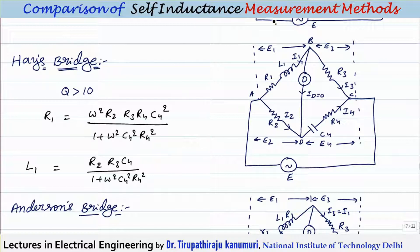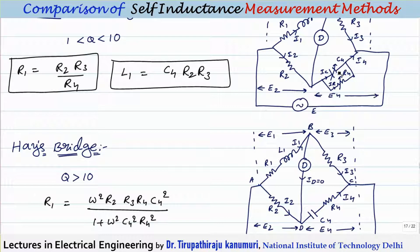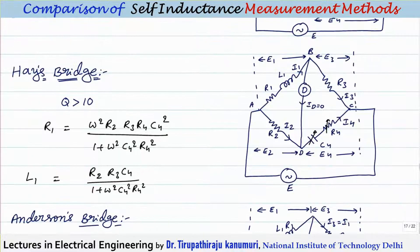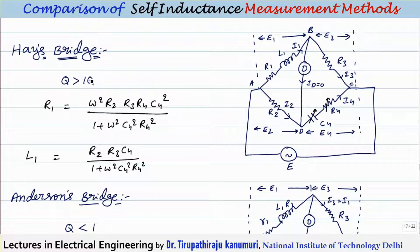The Hays bridge is a modification of the Maxwell's inductance capacitance bridge. Here, instead of keeping the capacitor in parallel with the resistance, we keep a variable capacitor in series with a variable resistor. They are kept in series so that it can be effectively used for Q values greater than 10.